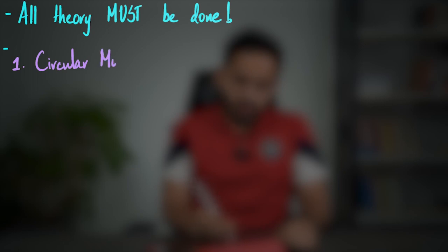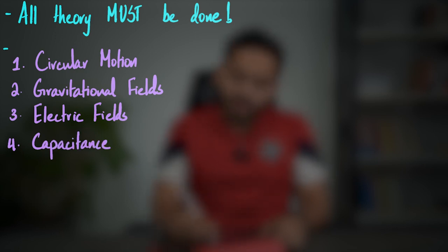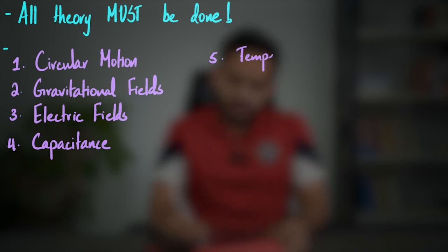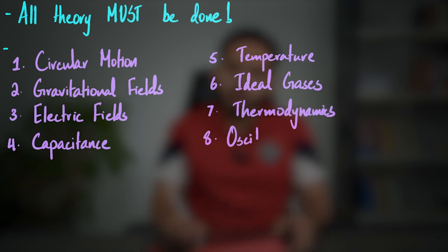To explain my approach further, I'll list down all the topics in a particular order. The first one is circular motion, then gravitational fields, then electric fields. Closely linked to electric fields is capacitance. Moving on to other units, we have temperature — including the Kelvin scale — thermal properties, ideal gases, thermodynamics, and oscillations, also known as simple harmonic motion.